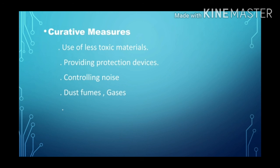The second type is curative measures, which consists of treatment of the affected workers. These include use of less toxic material, providing protection devices, and controlling noise, dust, fumes, and gas etc. These are some of the convenient and inexpensive measures that can be taken by the employer to prevent health hazards.